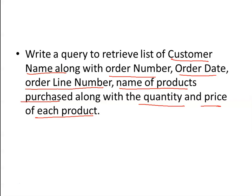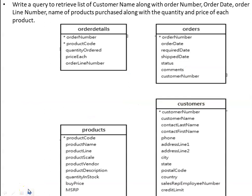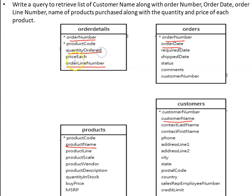First we have to find out in which relations all these attributes are available. The customer's name is available in the customers relation. Order number is available in the orders table as well as in the order details table. Order date is available in the orders table. Order line number is available in the order details table. The name of the products purchased is available in the products relation. The quantity purchased and the price of each item are both available in the order details table.